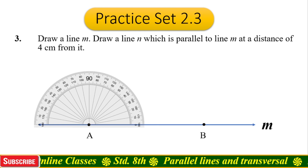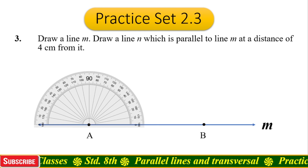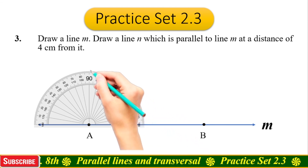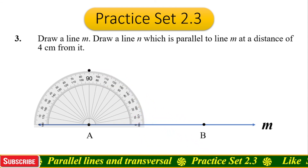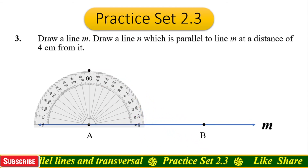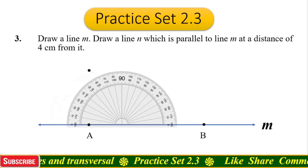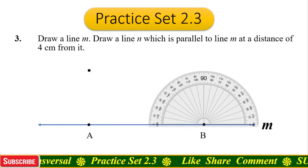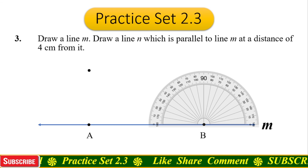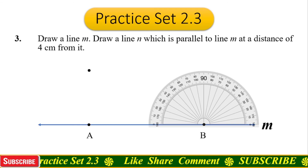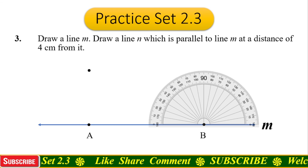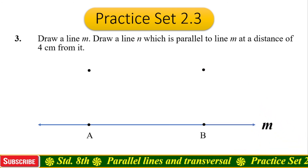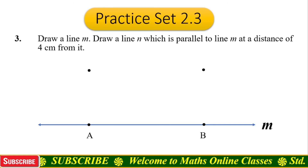Measure up to 90 degrees and take a point at 90 degrees. Now move your protractor to point B. Again repeat the process: measure 90 degrees and draw a point at 90 degrees. Remove the protractor.